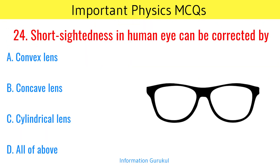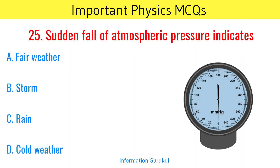Short-sightedness in the human eye can be corrected by? Concave lens. A sudden fall of atmospheric pressure indicates? Storm.